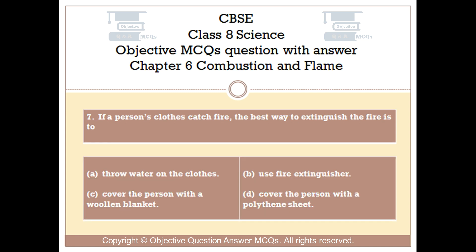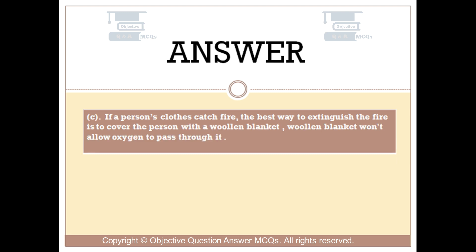Question number 7: If a person's clothes catch fire, the best way to extinguish the fire is to — Option A: throw water on the clothes. Option B: use a fire extinguisher. Option C: cover the person with a woolen blanket. Option D: cover the person with a polythene sheet. The right answer is Option C. The woolen blanket won't allow oxygen to pass through it.